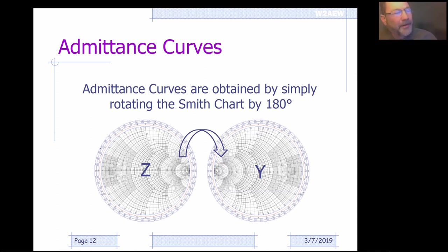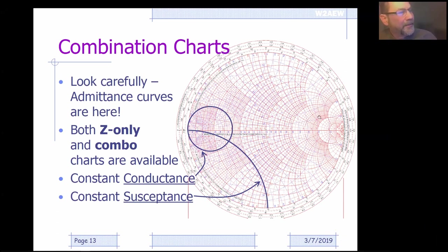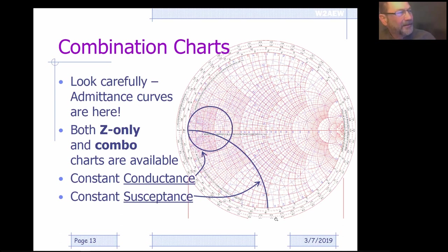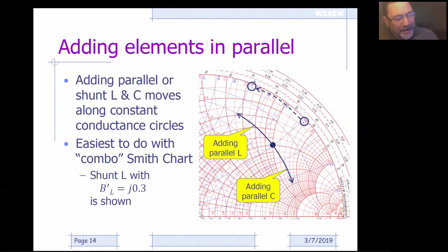On a nice Smith chart, not only does it display impedance information, it also displays admittances — done in light blue. We have red for impedances and blue for admittances. Just like we had constant resistance circles in red, we have constant conductance circles in blue, and constant susceptance arcs as well.